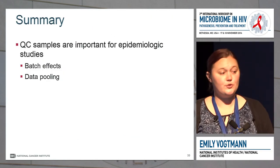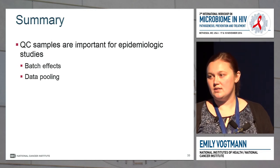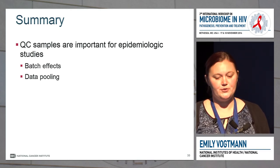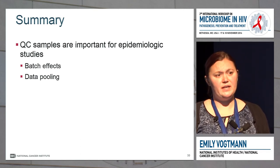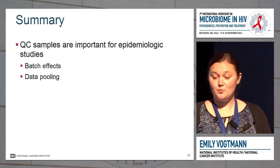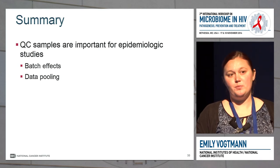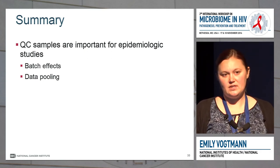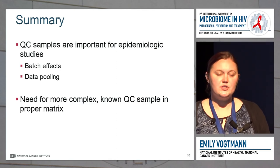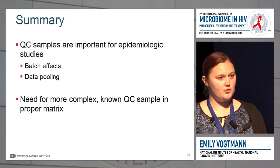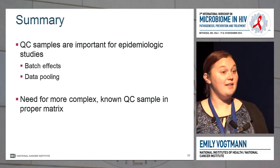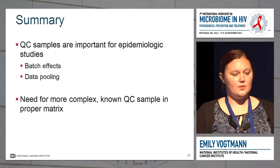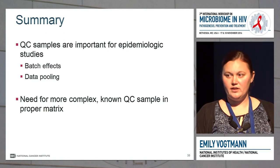In summary, QC samples are really important for epidemiologic studies. By using these samples, you can look for batch effects, and hopefully if the statistical methods are developed, there may be an ability to use these quality control samples to help with data pooling — potentially adjusting different plates so they can be pooled together. There's also still a need for a more complex known QC sample that's in the proper matrix, since artificial communities are not like a fecal sample. The ideal would be something more like the robo-gut sample that is the proper matrix but where you also know exactly what's in it.